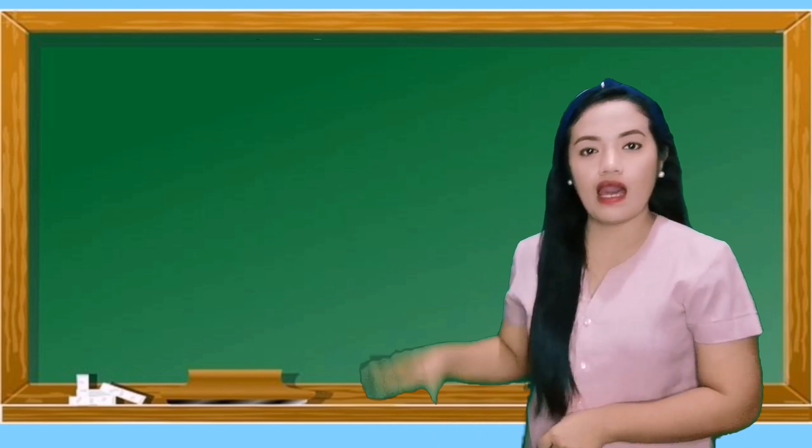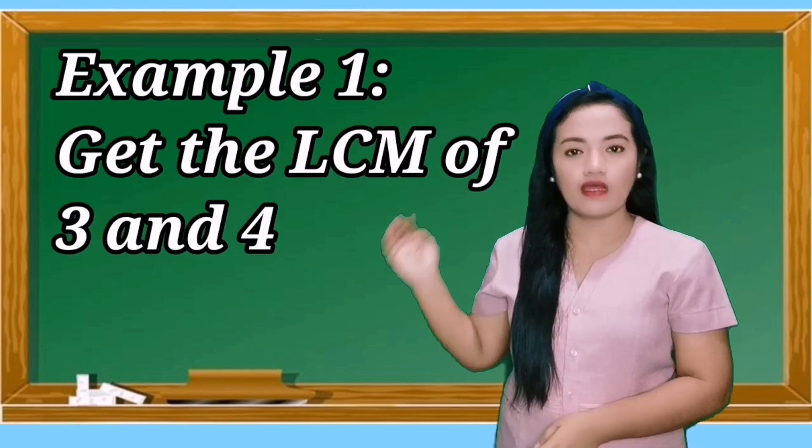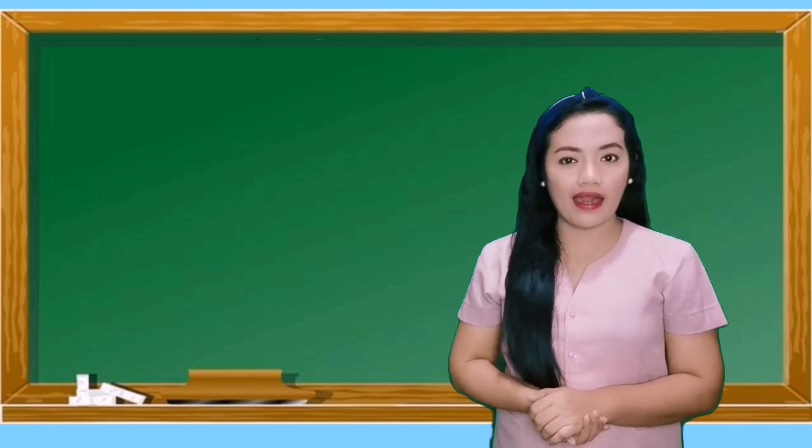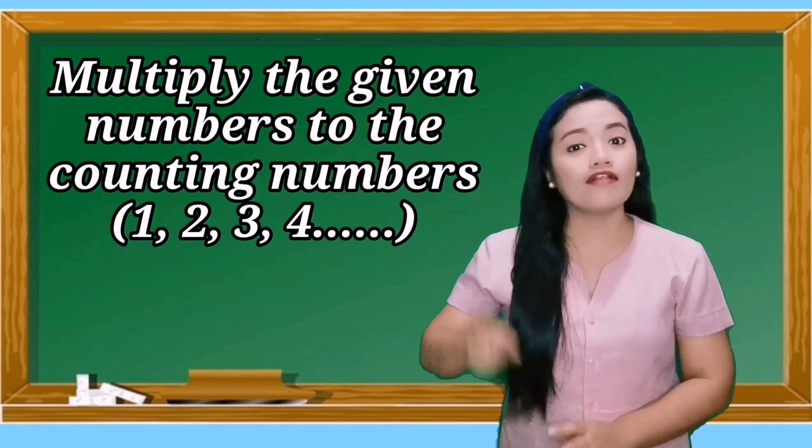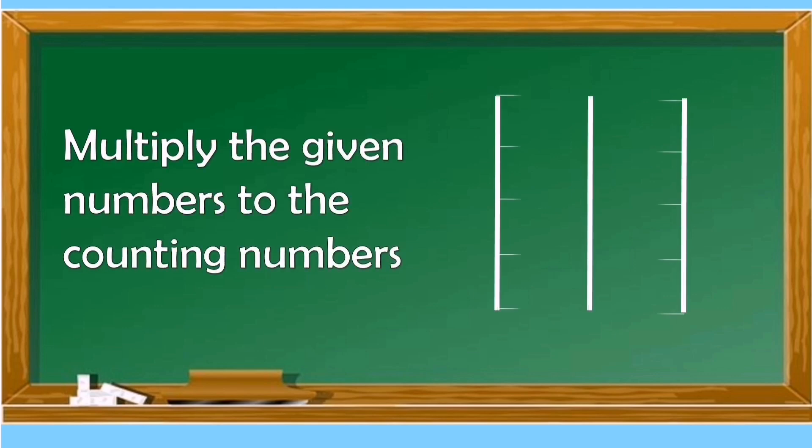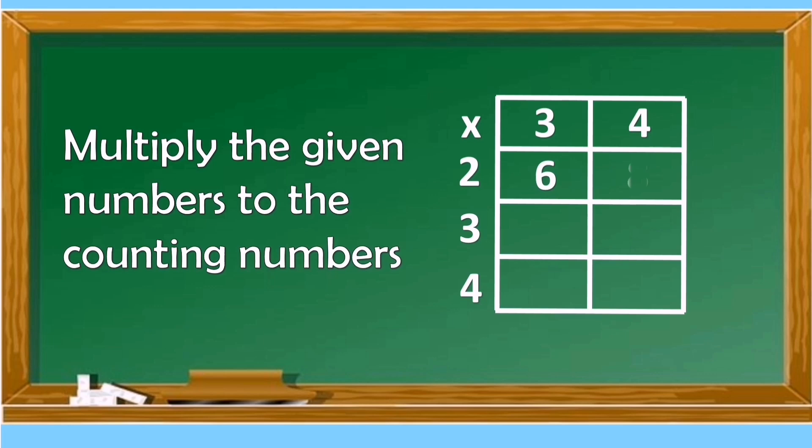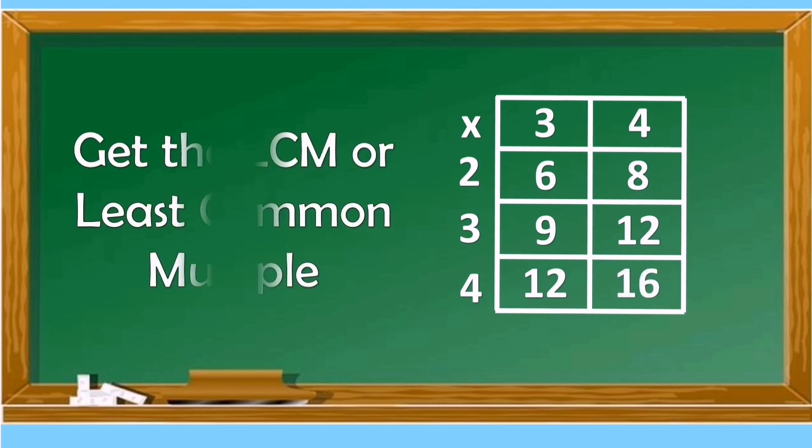For example, get the LCM of 3 and 4. The easy way to do that is to multiply the given numbers to the counting numbers 1, 2, 3, and 4 and so on. We will multiply the given numbers to the counting numbers to get their multiples. 2 times 3 is 6, 2 times 4 is 8, 3 times 3 is 9, 3 times 4 is 12, 4 times 3 is 12, and 4 times 4 is 16. The LCM of 3 and 4 is 12.